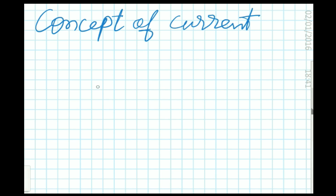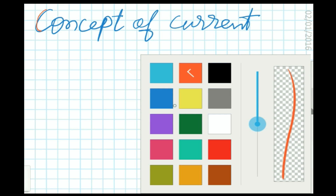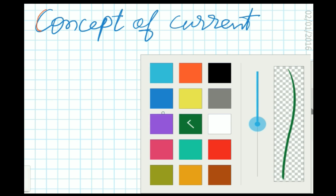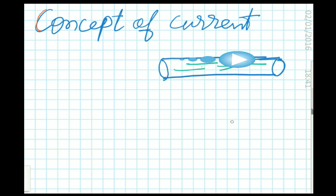Students, I am going to discuss the most important chapter of physics for class 10: current electricity. In current electricity, first we have to understand the concept of current. To understand the concept of current, we will show an analogy of water flowing through a tube and current.